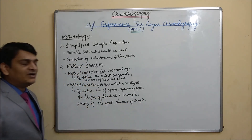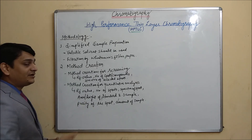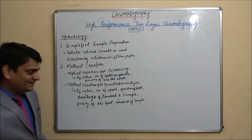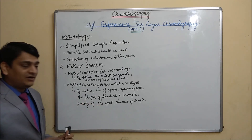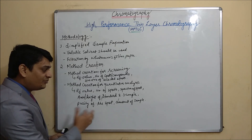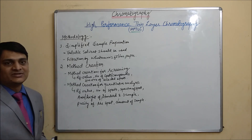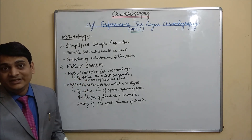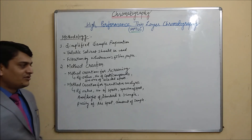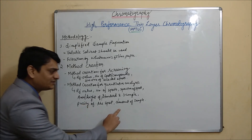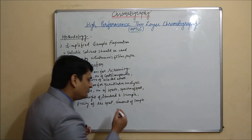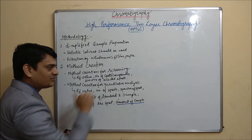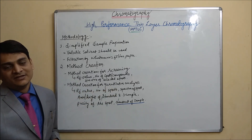By using quantitative analysis, we are able to determine the RF value of our compounds, number of spots, spectra of selected spots, area or height of our standard and sample, purity of the spot, and amount of the sample. This quantitative analysis is used for determination of the quantity of our analyte, and this is the basic requirement for method creation of quantitative analysis.